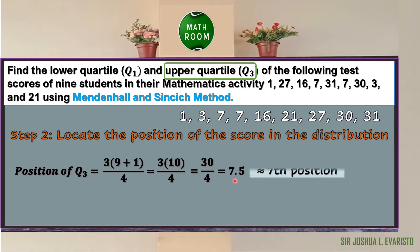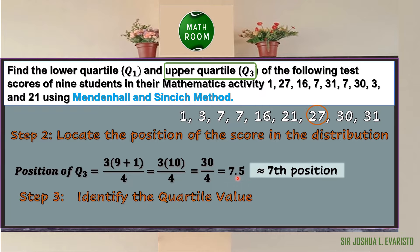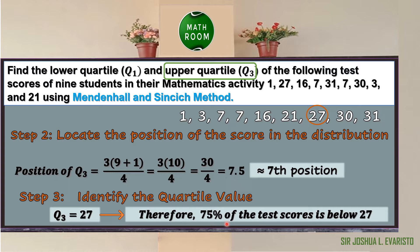The computed value 7.5 becomes 7 after rounding down, according to the rule of the Mendenhall and Sinsic method. Step 3 is to identify the quartile value. The upper quartile Q sub 3 is the 7th position in the distribution: 1, 2, 3, 4, 5, 6, 7. Therefore Q sub 3 = 27. Since Q sub 3 equals 75% of the distribution, 75% of the test scores is below 27.